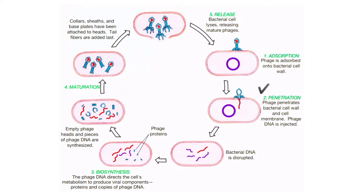The next step is penetration. The enzyme lysozyme, which is present within the phage tail, weakens the bacterial cell wall. When the tail sheath contracts, the hollow tube in the tail is forced to penetrate the weakened cell wall and come into contact with the bacterial cell membrane. The viral DNA then moves from the head through the tube into the bacterial cell.